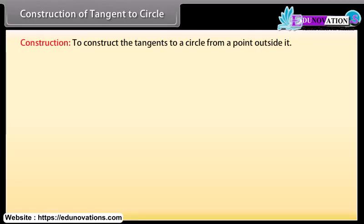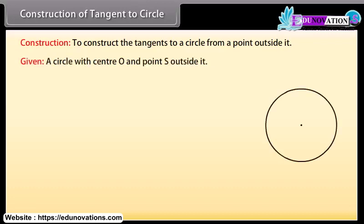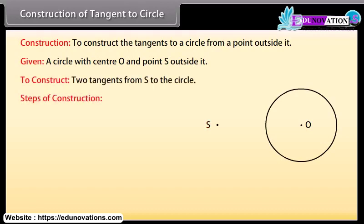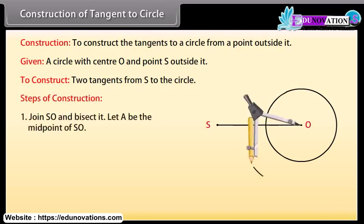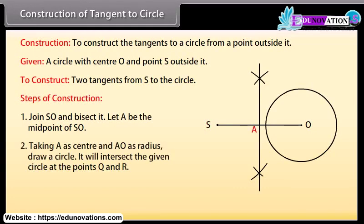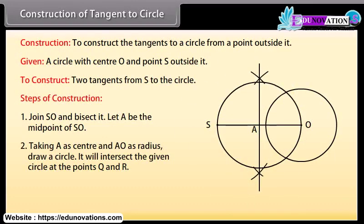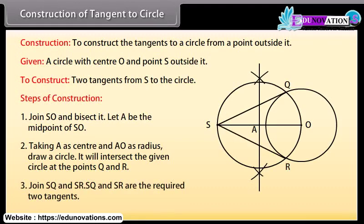Construction: to construct the tangents to a circle from a point outside it. We are given a circle with center O and a point S outside it. We have to construct the two tangents from S to the circle. Steps of construction: join SO and bisect it. Let A be the midpoint of SO. Taking A as center and AO as radius, draw a circle. It will intersect the given circle at the points Q and R. Join SQ and SR. SQ and SR are the required two tangents.